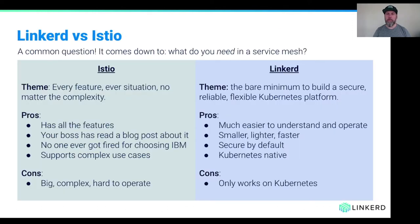Linkerd versus Istio: Istio has a lot of marketing energy behind it, but I think it comes down to what you need in a service mesh. Istio is designed to handle a very large set of scenarios and has a very large feature set, but the downside is that it is very complex to operate. Linkerd has a very different philosophy — give you the bare minimum to build a secure, reliable, and flexible Kubernetes platform. It's much easier to understand and operate, smaller, lighter, faster, but it is also very Kubernetes-specific. If that doesn't work for you, then Linkerd will not be the right service mesh for you.